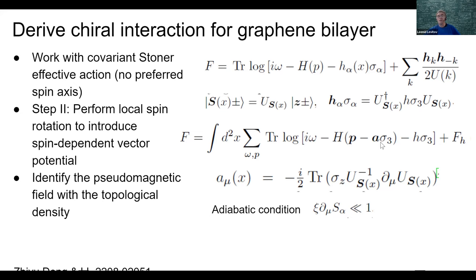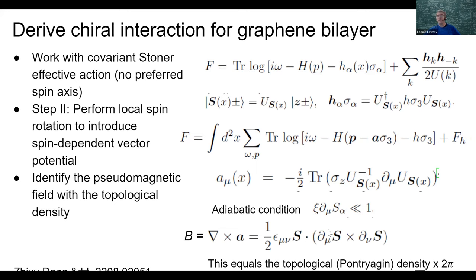If this adiabatic condition is fulfilled — if our spin polarization is sufficiently slowly varying — then our vector potential becomes approximately Abelian. We can then take the curl of that potential and discover that it is actually equal to the spin chirality density S·(∂S × ∂S), which is also equal to the topological density — the degree of the mapping of the two-dimensional plane onto a unit sphere, giving the number of wrappings of the spin configuration.